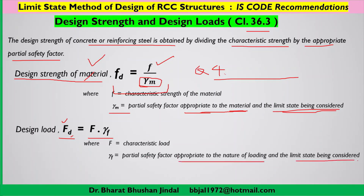For design load, capital F_d equals the characteristic load F multiplied by partial safety factor, appropriate to the nature of loading and the limit state being considered. In design strength we divide by partial safety factor, but for design load we multiply — meaning we take strength at a lower side but load at a higher side. This ensures that in structural design calculations, the possibility of failure is minimized.